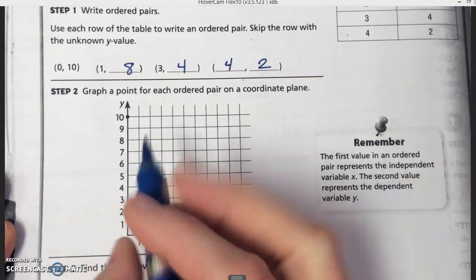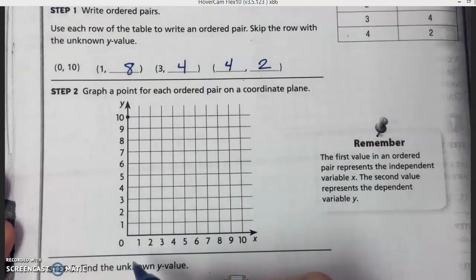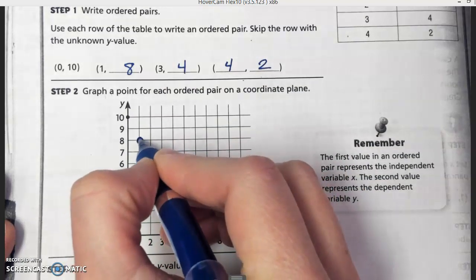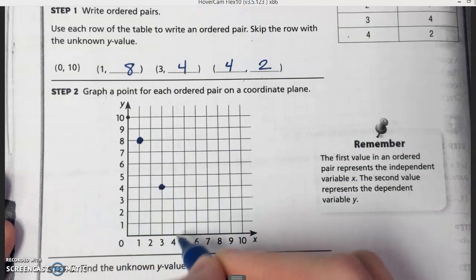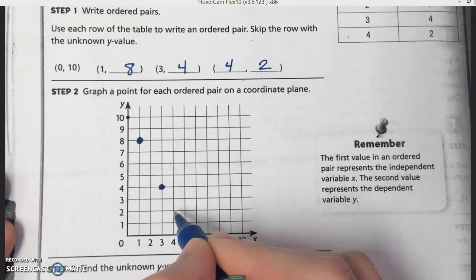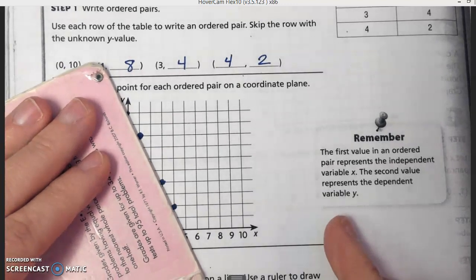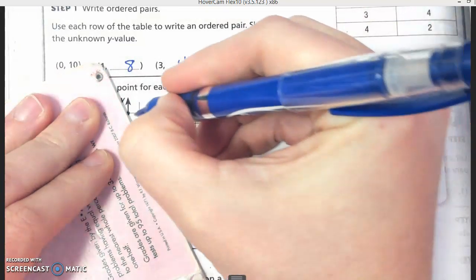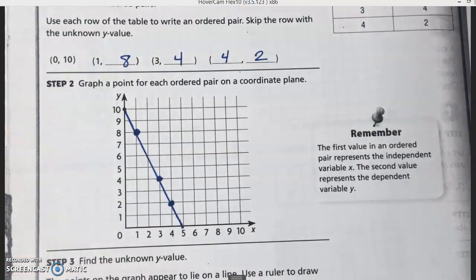Now we're going to graph those. Zero and ten would be here. One and eight would be here. Three and four. And four and two. Now take your protractor and use it to connect them like that.